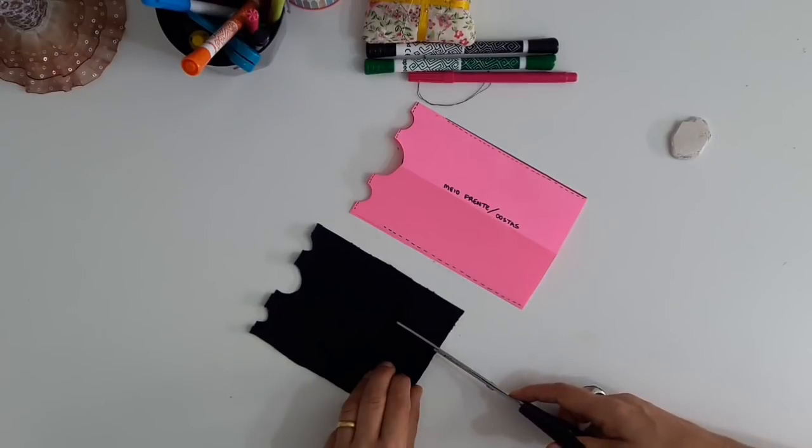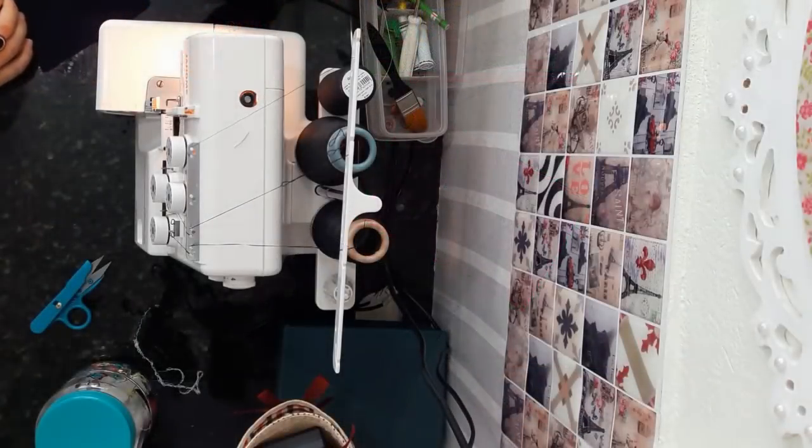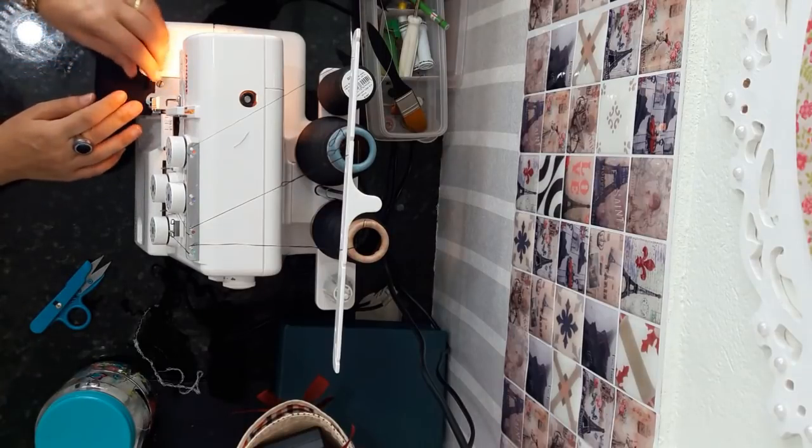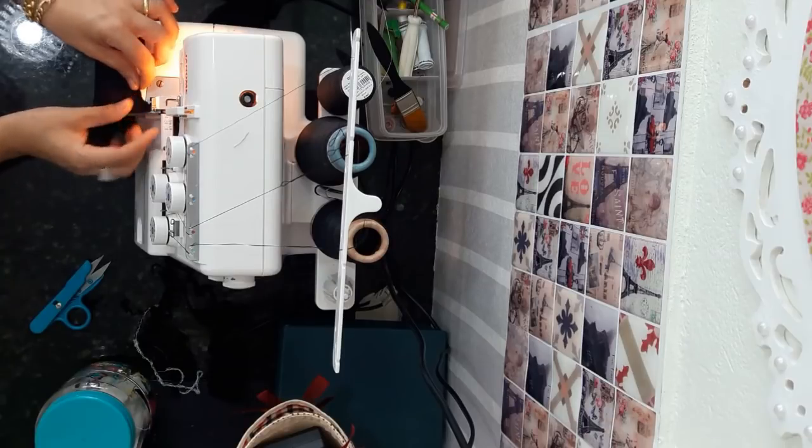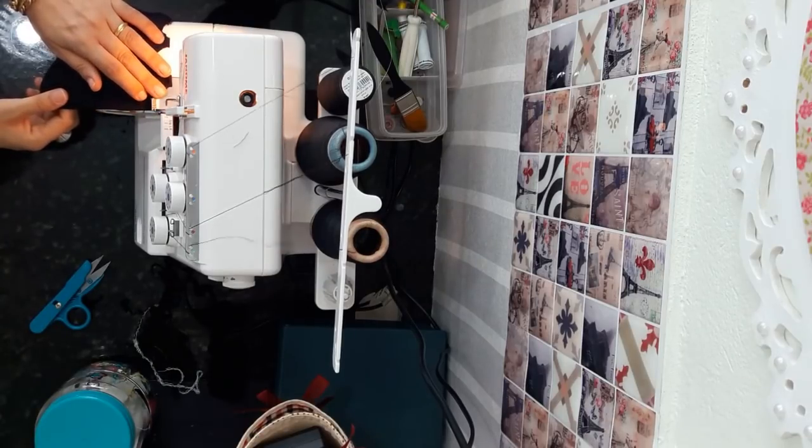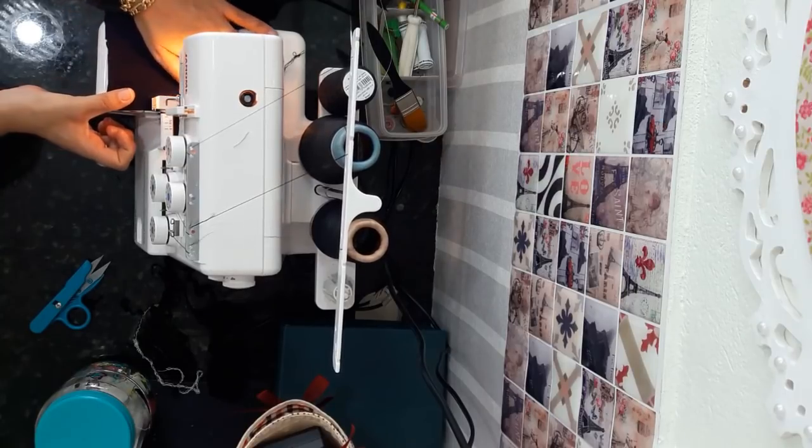And if you want, you can even make a detail after making an opening in the center front. I'm going now to the overlock and I'm going to sew, as I told you, the lateral, the right, the left lateral and the shoulders. And that's it.